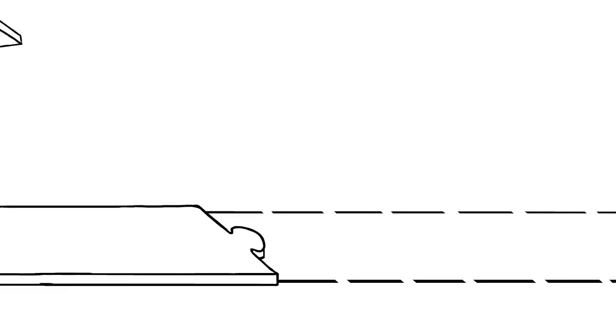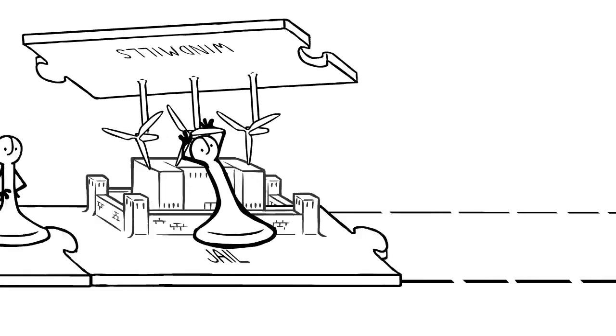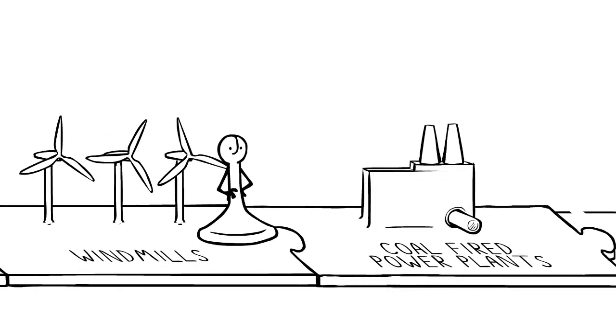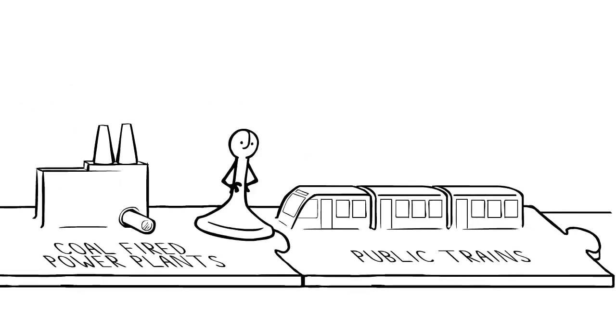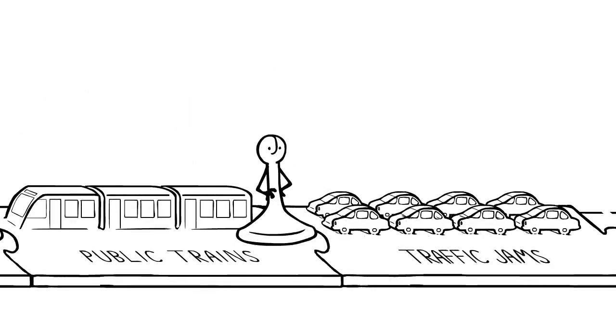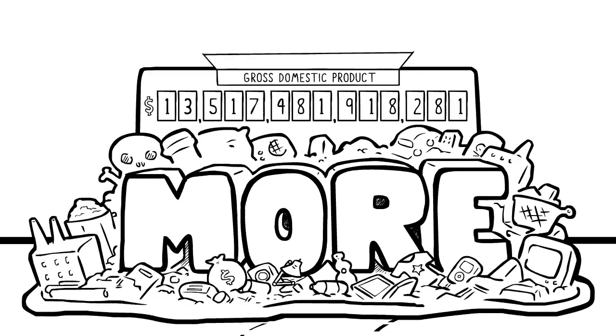But there's a big difference between more kids in school or more kids in jail. More windmills or more coal-fired power plants. More super-efficient public trains or more gas wasted in traffic jams. But in this game of more, they're counted the same.